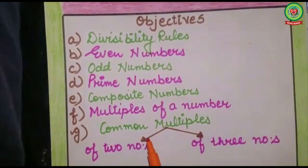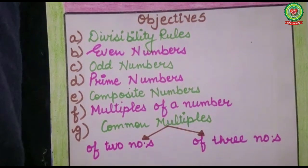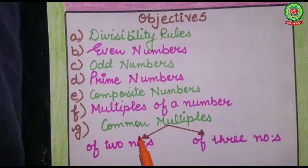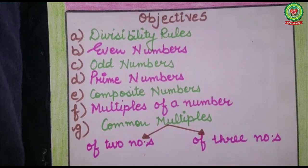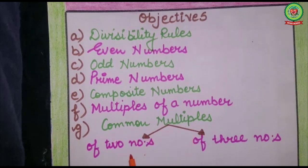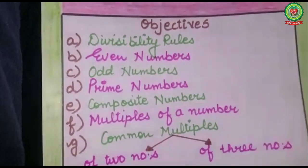So our today's topic is common multiples. We have to learn how to find common multiples of two numbers and common multiples of three numbers. Today I will discuss how to find common multiples of two numbers. Let's take some examples to understand it.